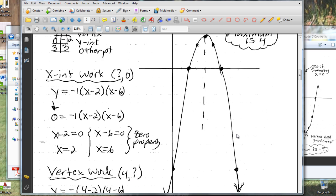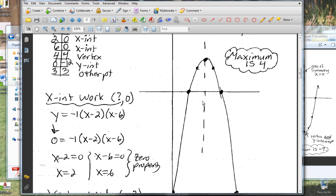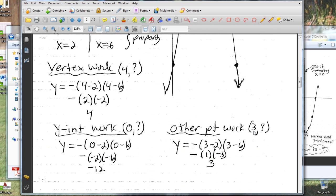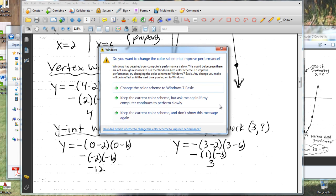Then I wanted to get one more point. So I decided that three looked like it would be an interesting point to find. So I chose to plug in three as my other point. So here's my other point. I plugged in three. And when I plugged in three and worked it out, I ended up getting three out.